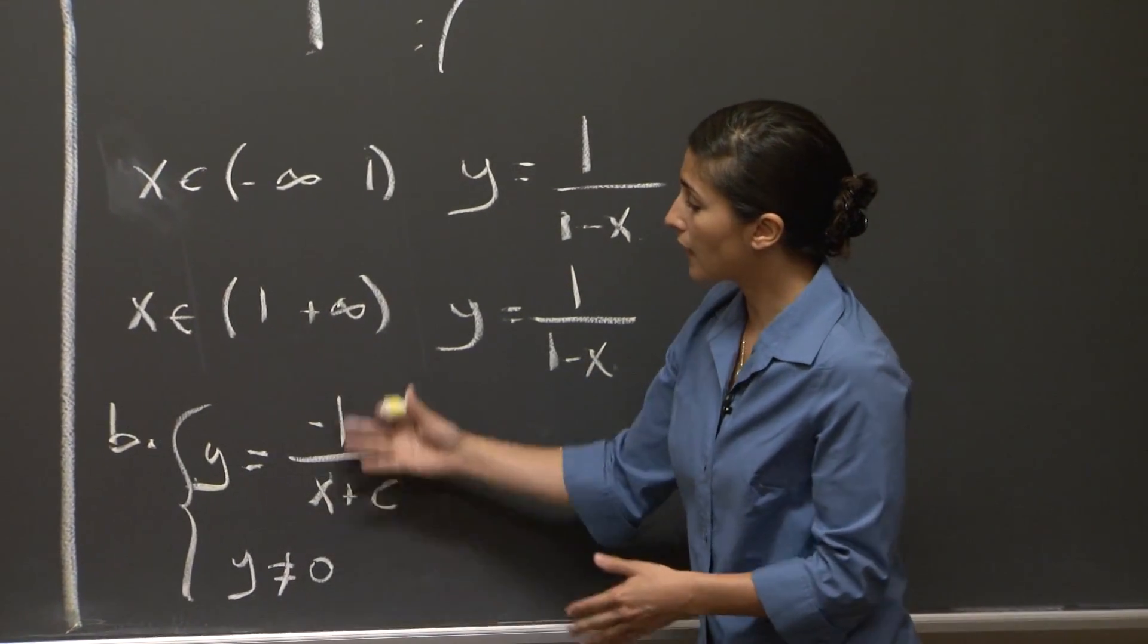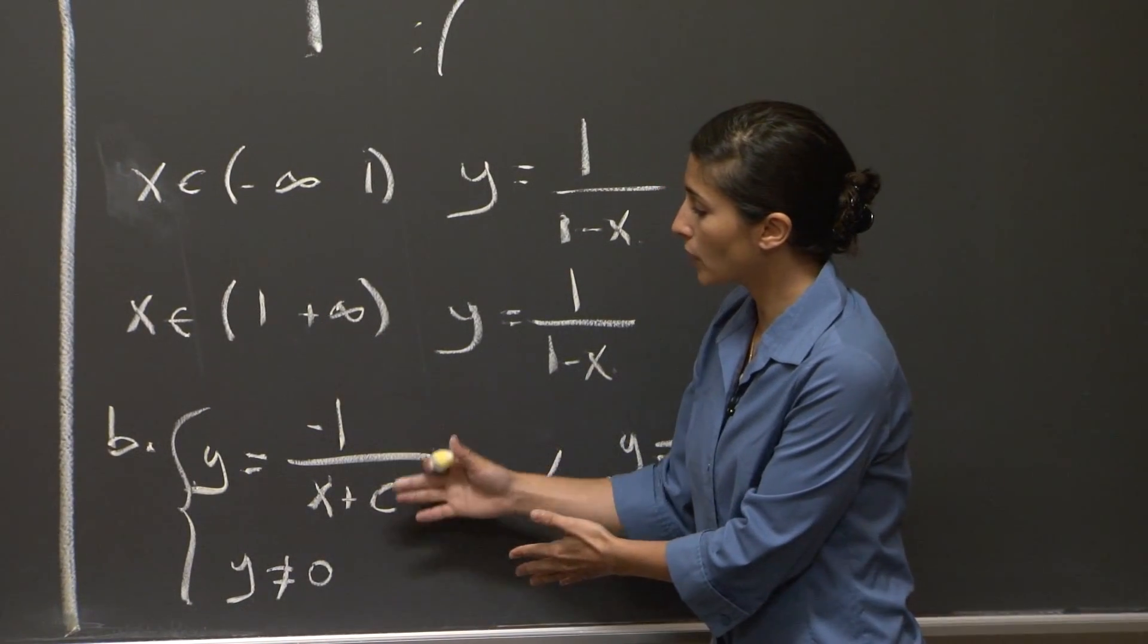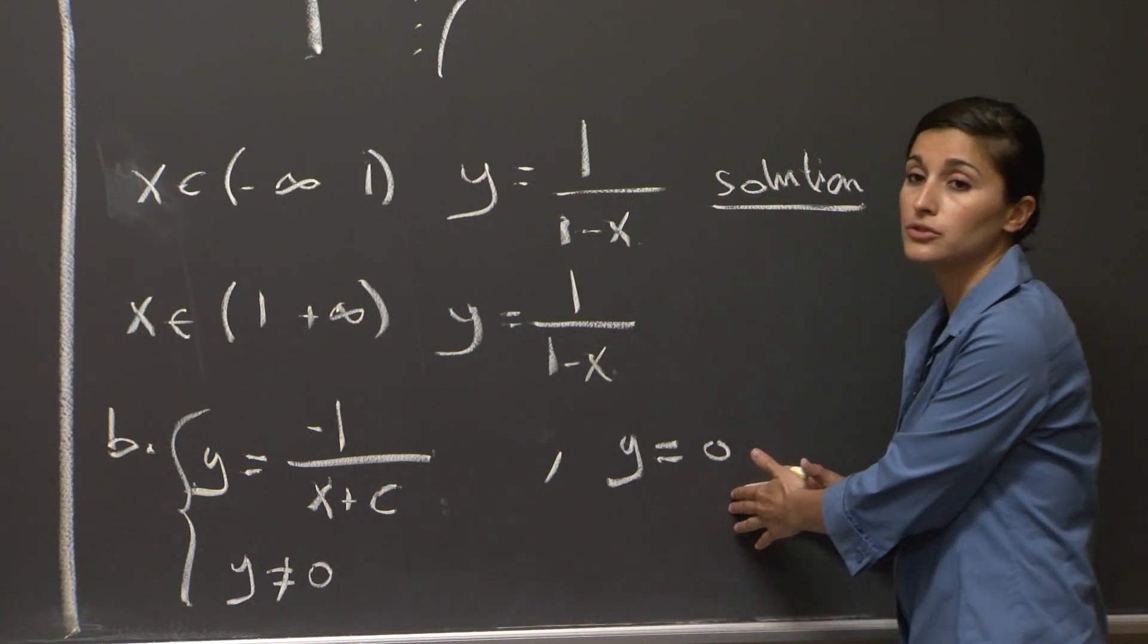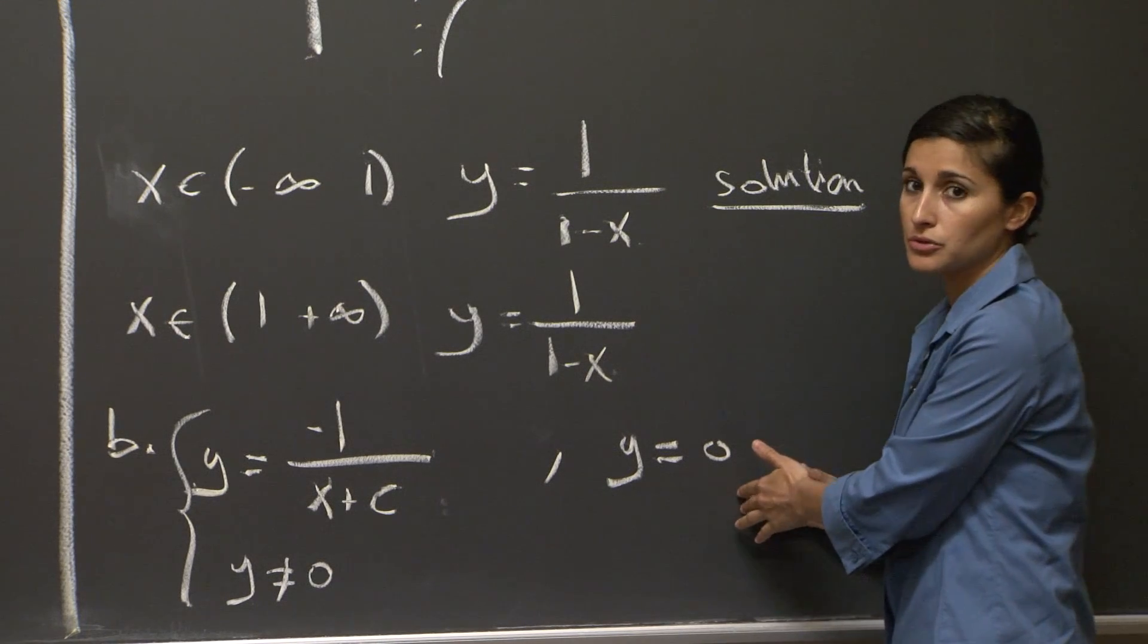And then we basically have one kind of solution, minus 1 over x plus c, that excludes y equals 0, and another kind of solution that is simply the 0 solution.